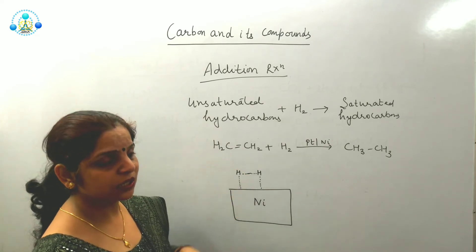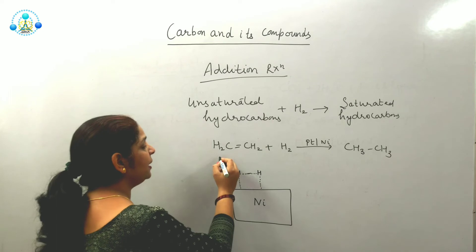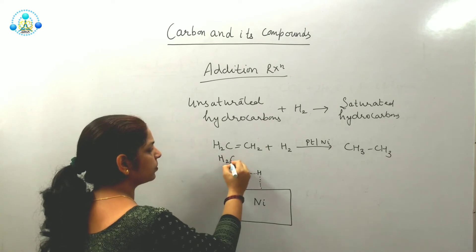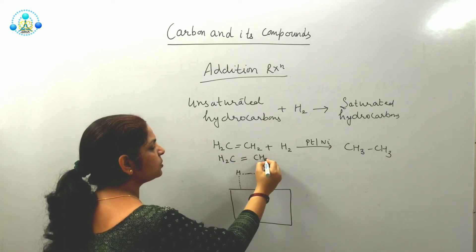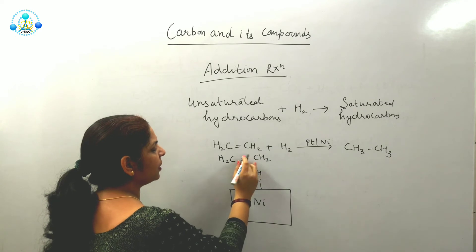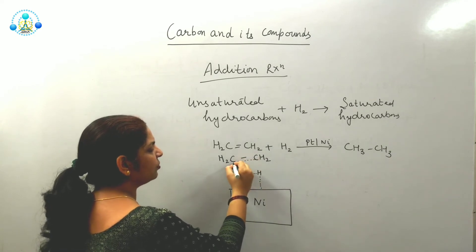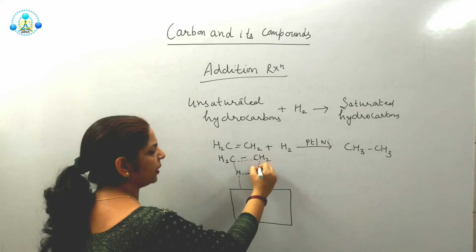So hydrogen molecule is sticking on the surface. When ethene comes here, this bond of carbon and hydrogen will start breaking and it will start making bond with the hydrogen.